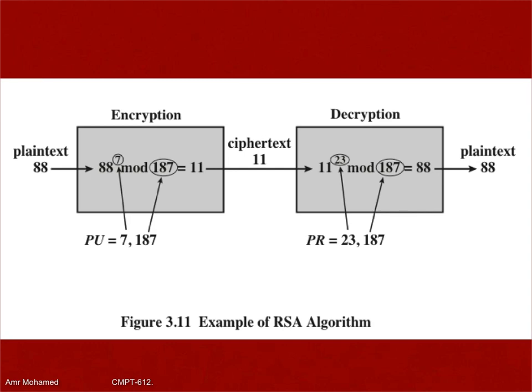We started to talk about this example where we had two keys: the private key and the public key. The private key E may have multiple values — if you know the totient of N you can factorize it and find any number that is co-prime with the totient of N. However, once you select E, the calculation of D becomes unique, because the multiplicative inverse is unique.